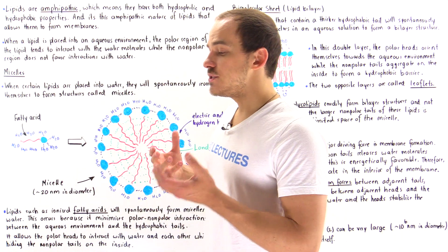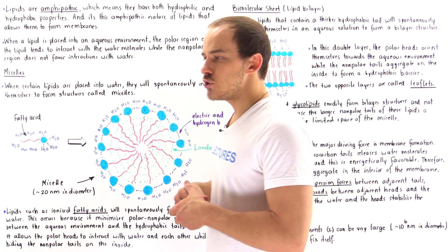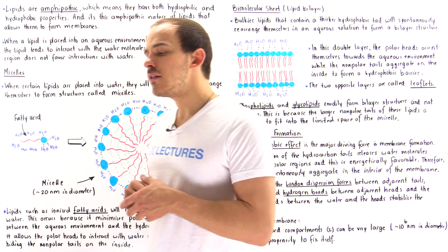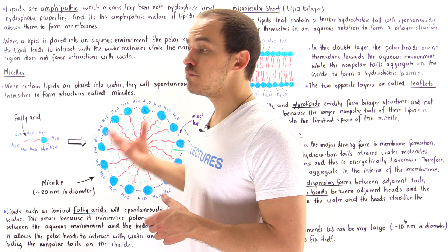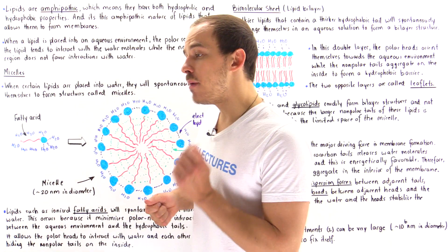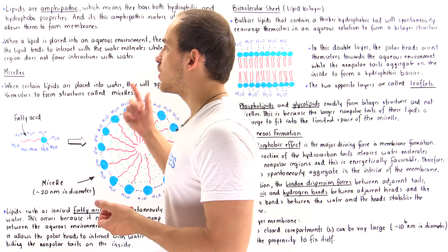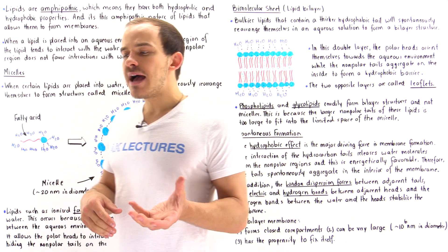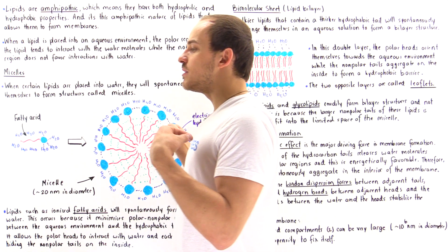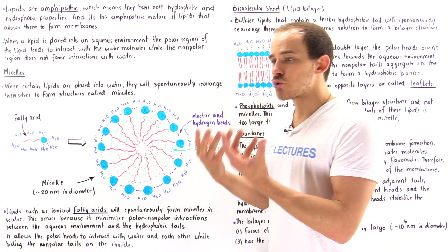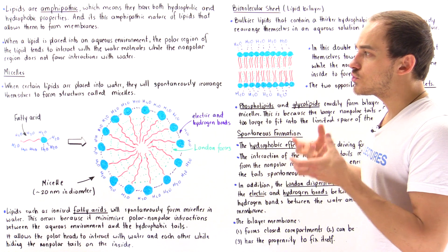So when we take a lipid molecule and place it into an aqueous environment where water is the solvent, the polar water molecules will tend to form favorable interactions — hydrogen bonds — with the polar region of that lipid, but the non-polar hydrophobic section of that lipid will not want to interact with the water molecules. When we place many of these lipids into an aqueous environment, to create a structure that is lower in energy, they will spontaneously rearrange themselves and form these structures.